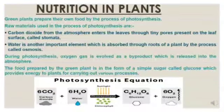Plants make their own food by the process called photosynthesis. That is why the mode of nutrition seen in plants is autotrophic. The raw materials used in the process of photosynthesis are carbon dioxide and water. Carbon dioxide is absorbed from the atmosphere through the leaves, which have tiny pores present on the surface called stomata.